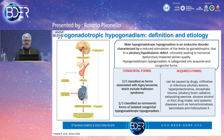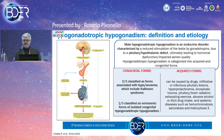Starting with hypogonadotropic hypogonadism, this is generally due to hypothalamus-pituitary damage. We can have congenital forms — some associated with anosmia like Kallmann syndrome, and other normosmic forms with a genetic origin. We also have several acquired forms generally due to pituitary tumors or tumors of the area, irradiation of the pituitary, and other chronic diseases which involve the pituitary gland.